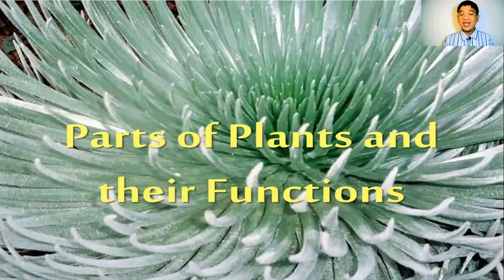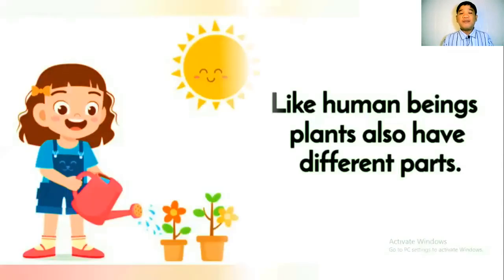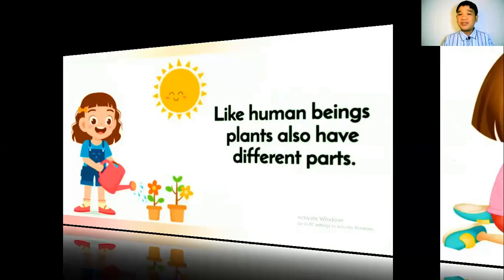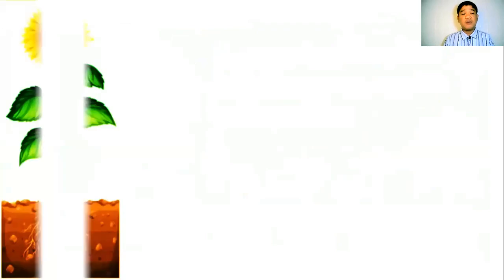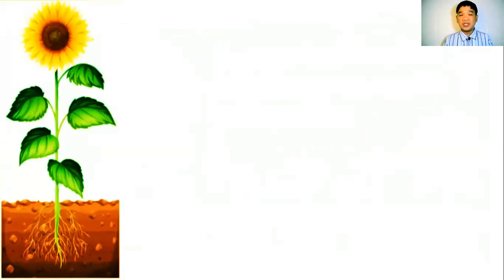Now let's proceed to the different parts of the plant and their functions. Plants are like human beings — they also have different parts. These parts help them to grow, survive, and to reproduce. The plant has two categories: the first category is the parts of the plant above the soil, which we call the shoot of a plant.